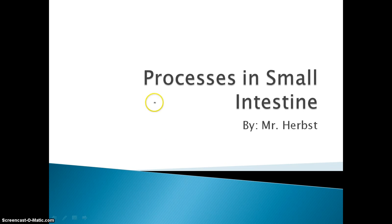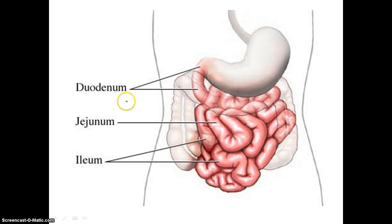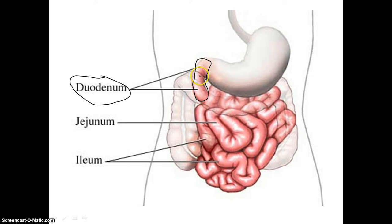Hi everyone, this is Mr. Herbst here, and this is the processes that occur in the small intestine. Now in my last video I talked about this region right here called the duodenum. That is the first part of our small intestine, and I had mentioned that that is pretty much where all of our nutrients are finishing their digestion — all our fats, all our proteins, all our carbohydrates pretty much are done being digested at that point.